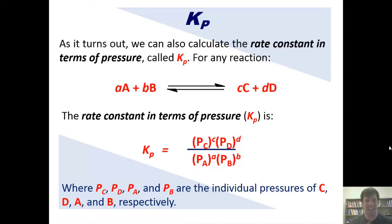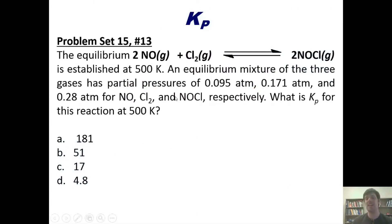So let's take a look at an exciting lecture problem. The gaseous equilibrium reaction shown here is established at 500 kelvins. An equilibrium mixture of the three gases has partial pressures at equilibrium of these individual values shown here for each of these substances, respectively. What, then, is the Kp for this reaction at 500 kelvin?